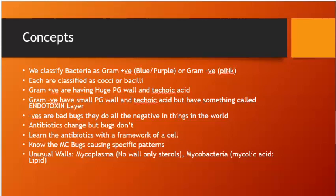We classify bacteria as gram positive and gram negative. Gram positives under the microscope look purple or blue — positive, purple. Gram negatives look pink. It has an N alphabet — negative, pink. Each of these are classified as cocci or bacilli.